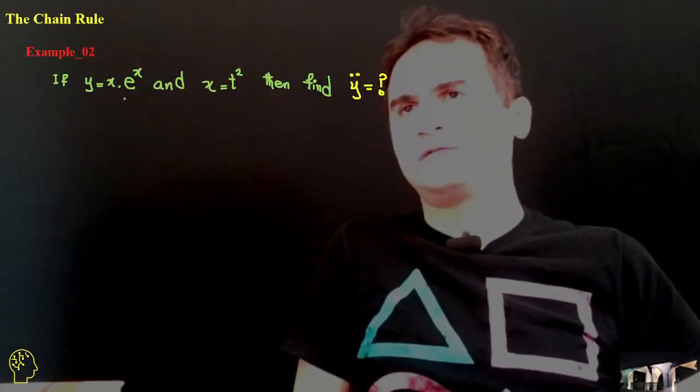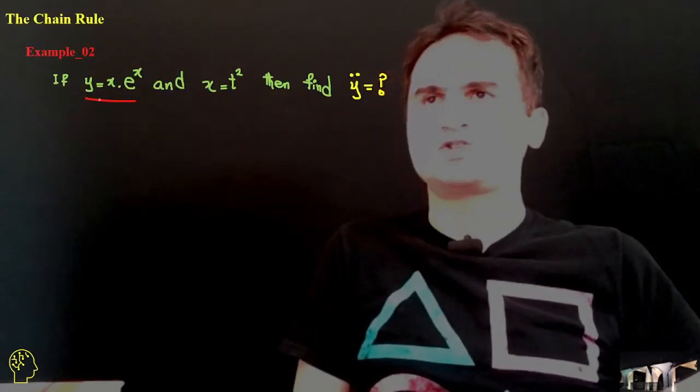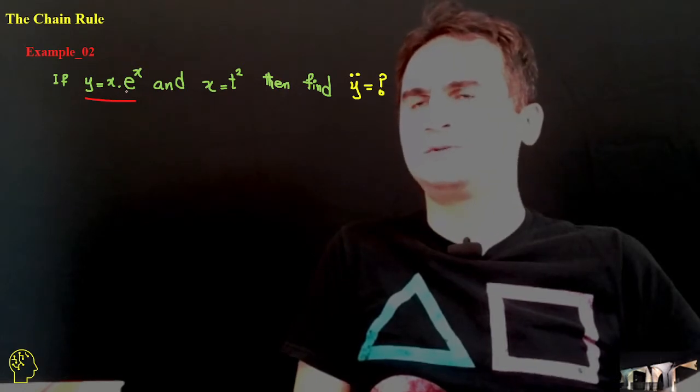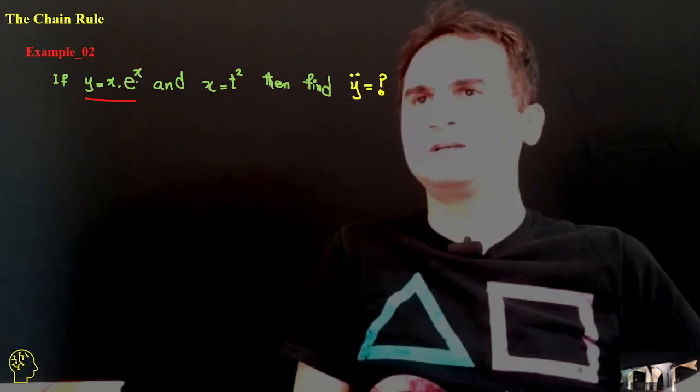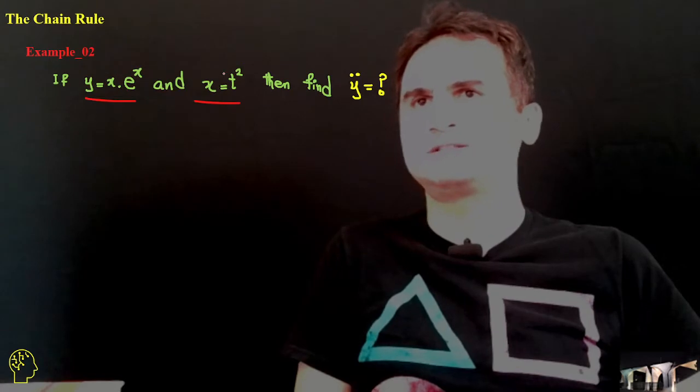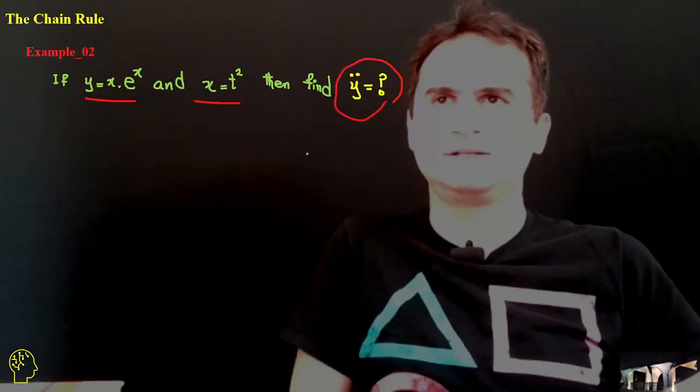So if we have y as a function of x, and that's x to the power of x times e to the x, and x itself is t squared, then we want to know what y double dot is.